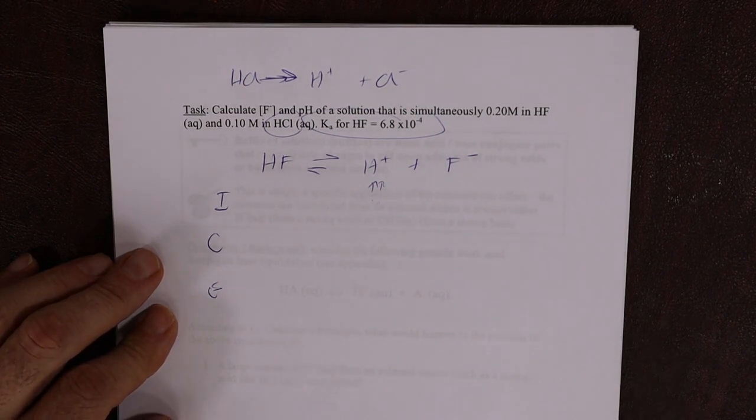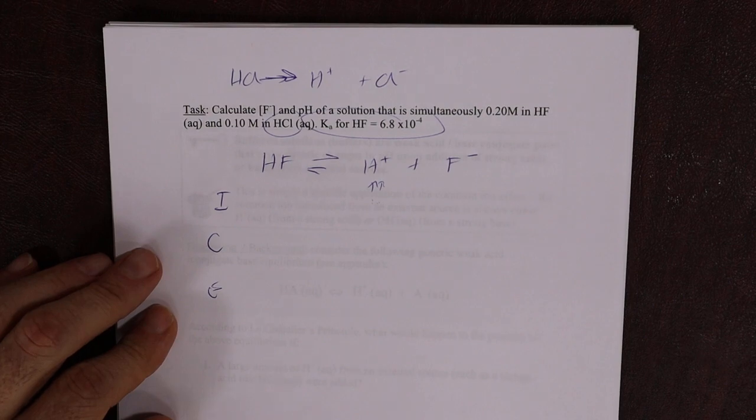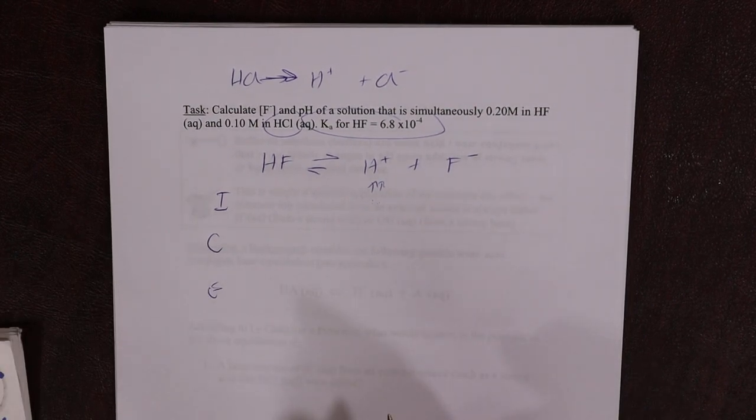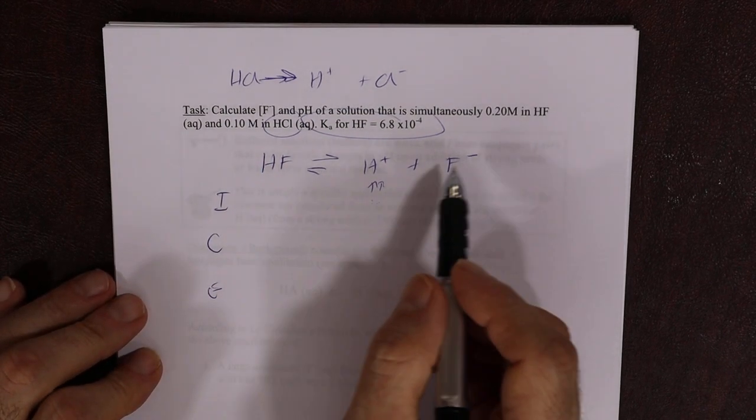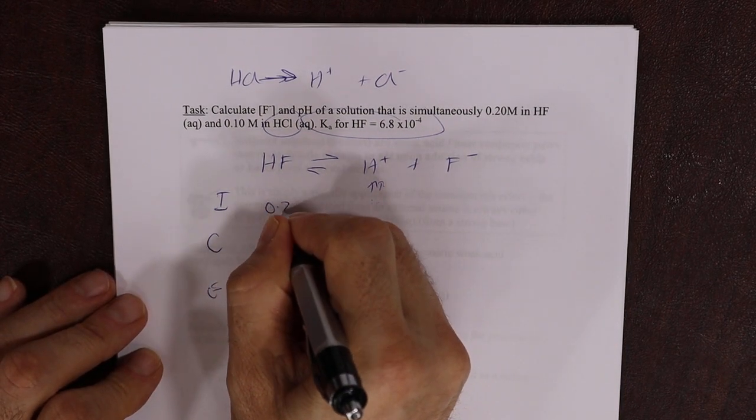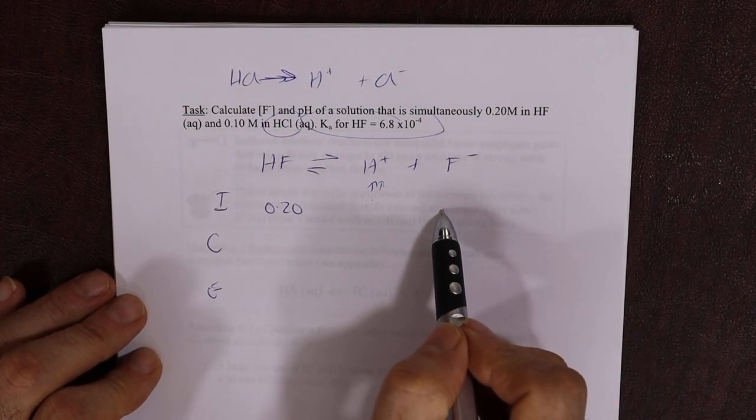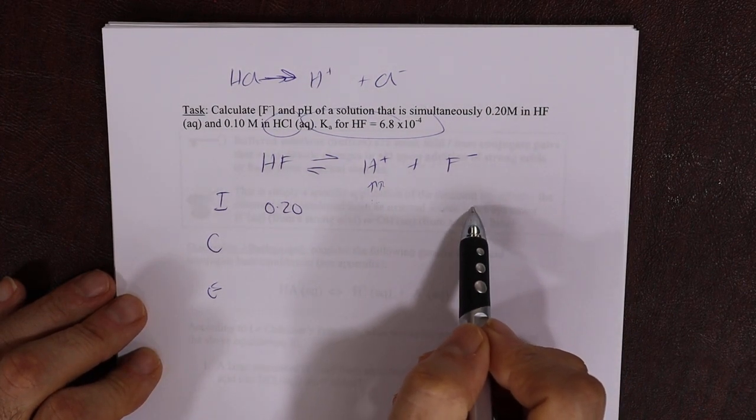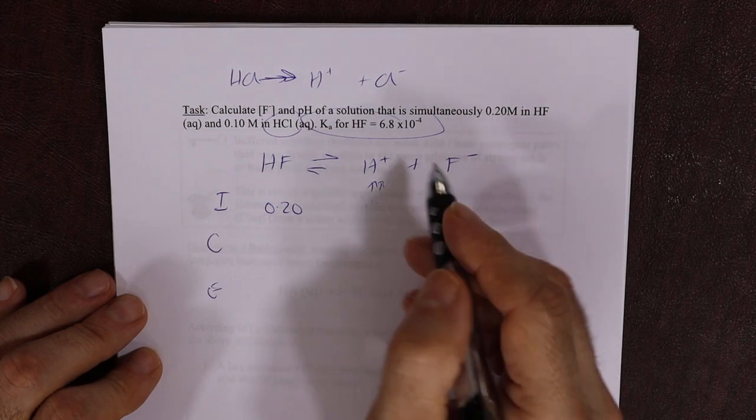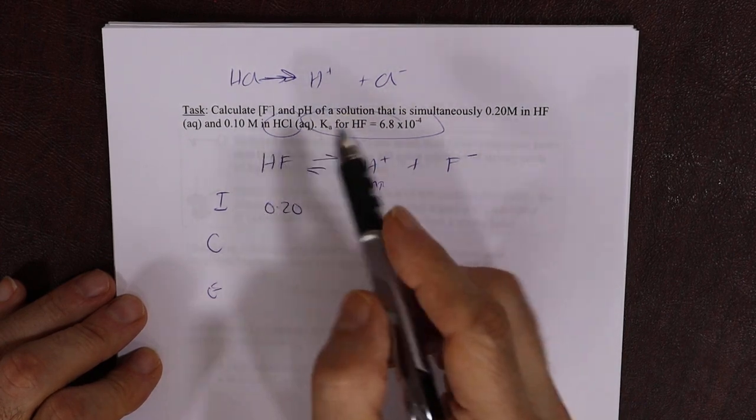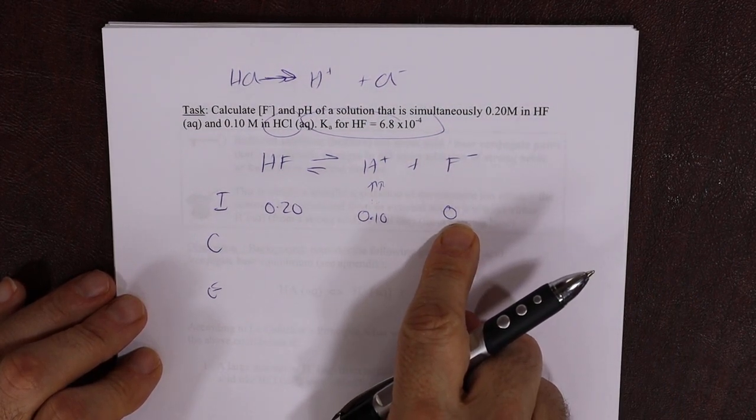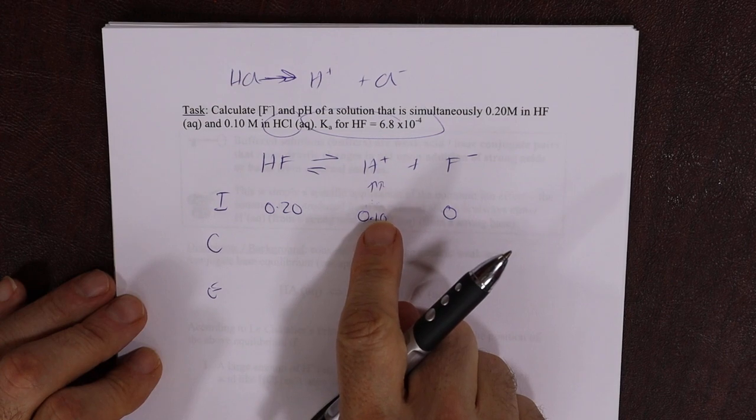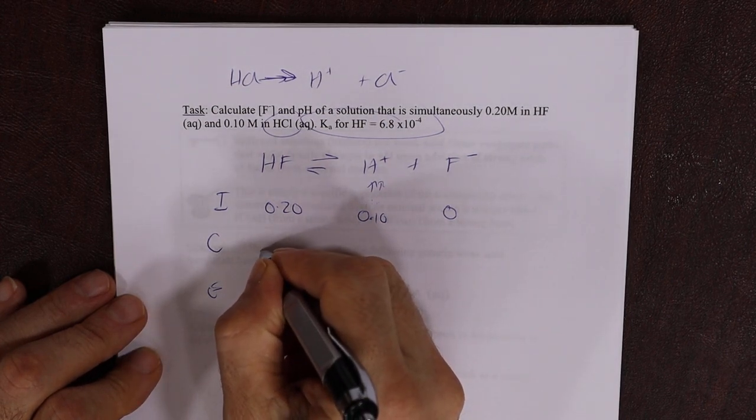Calculate the F minus ion concentration and the pH of a solution that's simultaneously 0.2M HF and 0.1M HCl. They give us Ka for HF, which is a nice clue. HF is the weak acid, so that makes sense. So initially, 0.2 HF, 0 and 0 if it was just the weak acid equilibrium. But we're throwing in some HCl of 0.1, and HCl gives us 0.1 H+. H plus is the common ion here.